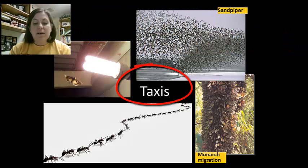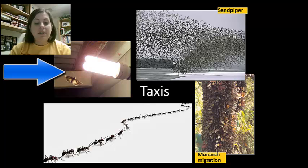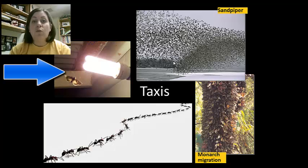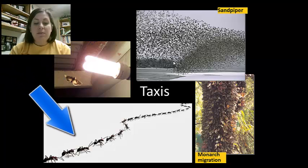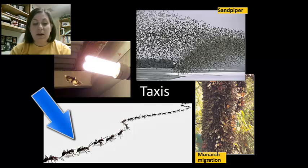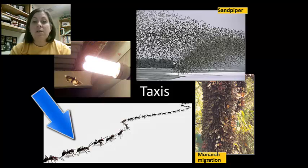Taxis is another form of innate behavior where an organism moves towards or away from a stimulus. Phototaxis is a response to light — moths have a positive phototaxis where they move towards the light, whereas cockroaches have a negative phototaxis where they run away from the light. Chemiotaxis is a response to chemical pheromones, seen with ants. Some pheromones are used to attract mates or mark territories, and ants will form a chemical trail they can follow each other along — this is why they walk in a line, helping them find their home and locate food.